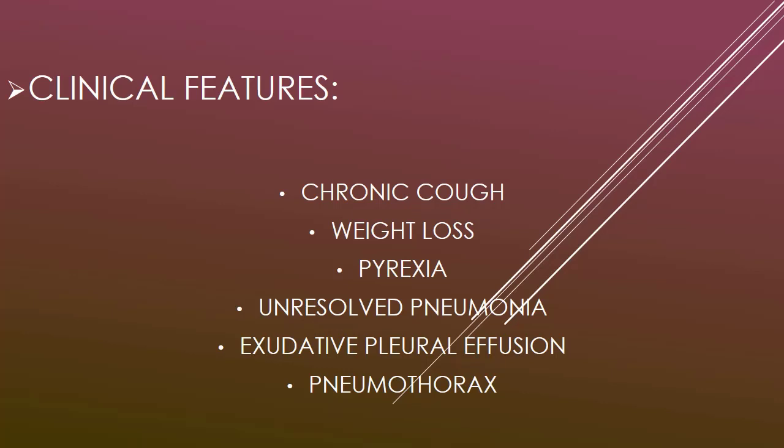Clinical features summary for secondary TB include: chronic cough with haemoptosis, weight loss, pyrexia of unknown origin, unresolved pneumonia, exudative pleural effusion, and pneumothorax.